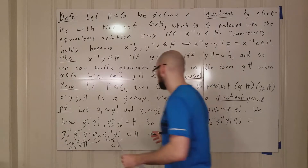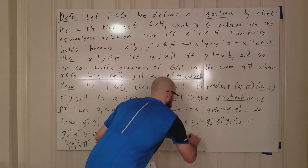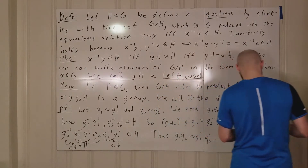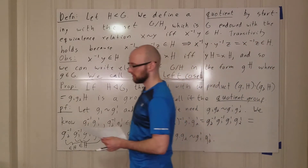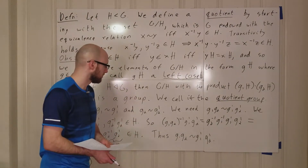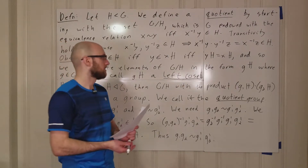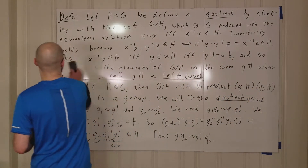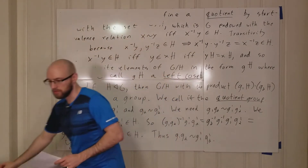Thus g1g2 is equivalent to g1 prime g2 prime. We just needed to check that this product is a well-defined function, and that's really all we needed — everything else works out fine from the group structure of G.